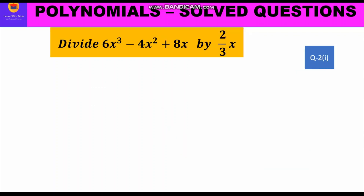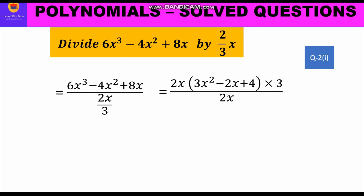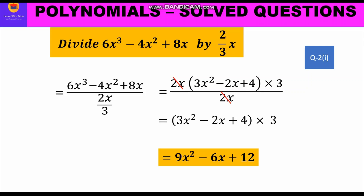Now let us take up question number 2, division of a polynomial by a monomial. The first part is: divide 6x cube minus 4x square plus 8x by (2/3)x. Writing in fraction form with 6x³ - 4x² + 8x in the numerator divided by (2/3)x, we take 2x common from the numerator to get 2x(3x² - 2x + 4), then multiply by the reciprocal 3 upon 2x. The 2x terms cancel and we get (3x² - 2x + 4) into 3, which equals 9x² - 6x + 12.